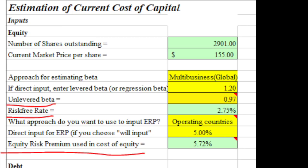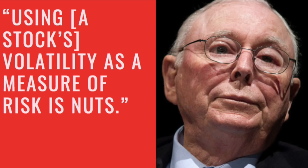You're basing your investment decision on the risk-free rate, but also on the beta coefficient and past equity premiums. This is where academics and practitioners strongly disagree. To quote Munger again: using a stock's volatility as a measure of risk is nuts.